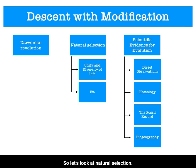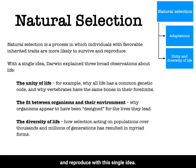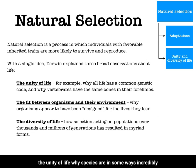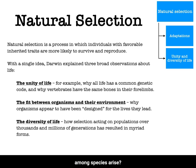Natural selection is a process in which individuals with favorable, inheritable traits are more likely to survive and reproduce. With this single idea, Darwin explained three broad observations about life. First, the unity of life — why species are, in some ways, incredibly similar. Second, why adaptation occurs — that is, why species appear to have been designed for the lives that they live. And finally, the diversity of life — why so many differences among species arise.